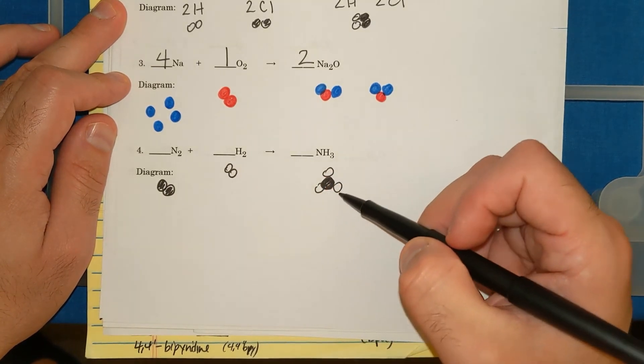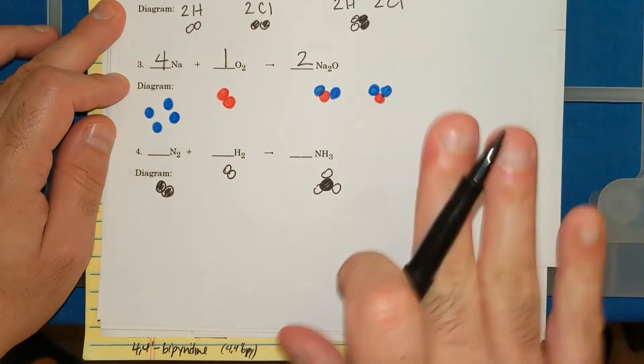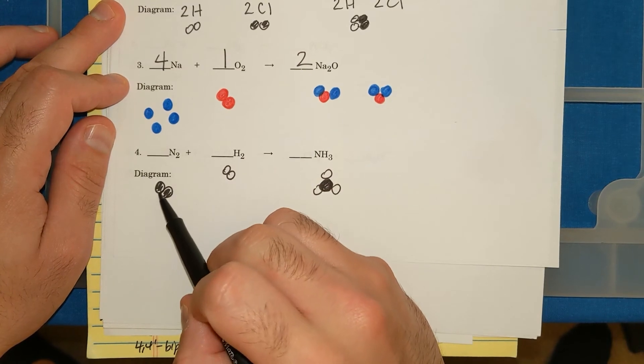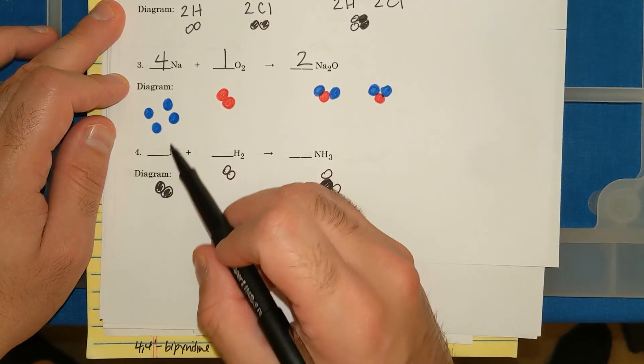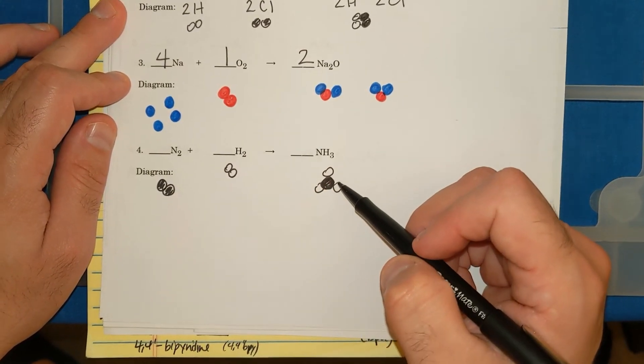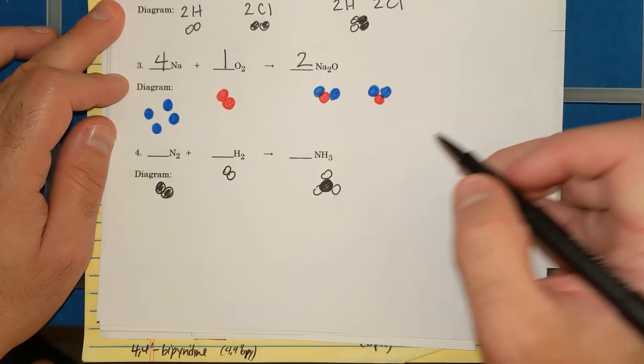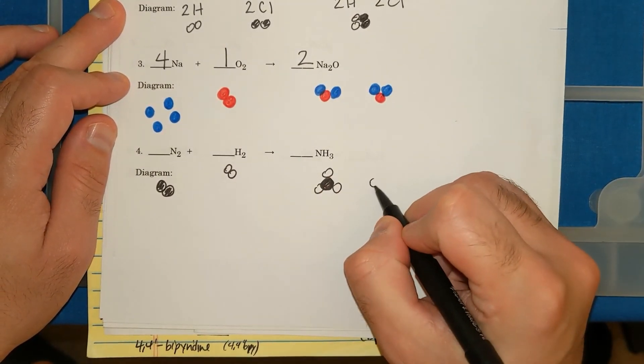Just by looking, I can see that I have 2 N's over here and only 1 N over here. I have 2 H's over here and 3 H's over here. I'm going to need more stuff on this side. So let me start by adding N. I have 2 N's here, only 1 N here. If I want more N's, I need to add another NH3.